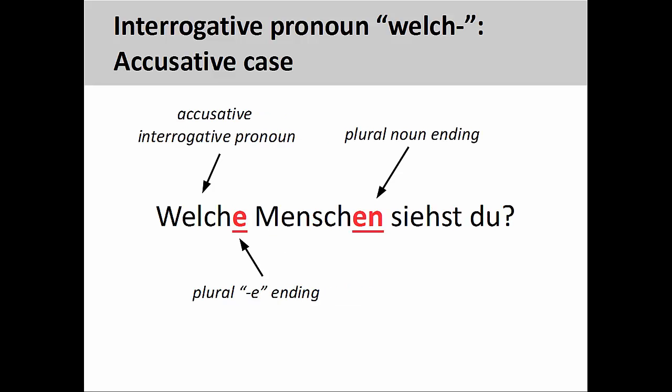We do need to be a bit careful when distinguishing between feminine and plural endings. Although the -e ending here could possibly be either feminine nominative or accusative, the noun ending -en and the presence of 'du' indicates that 'welche Menschen' must be plural accusative and the direct object of the verb.